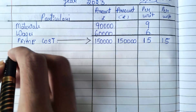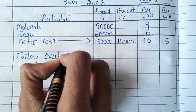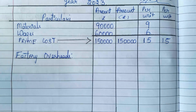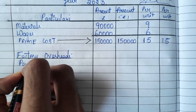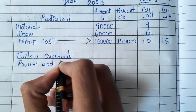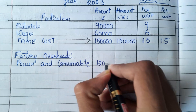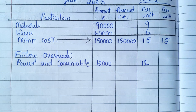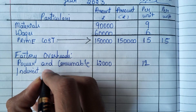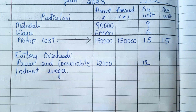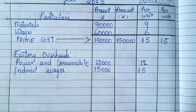Now, what do we need to add? We need to add factory overheads. What are the factory overheads given? Power and consumables — that comes under factory overheads. It is 12,000, and for one unit it is 12 rupees. Next, we have indirect wages, which as I told you in the previous video, comes under factory overheads. Indirect wages is 15,000, and for a single unit it is 15 rupees.